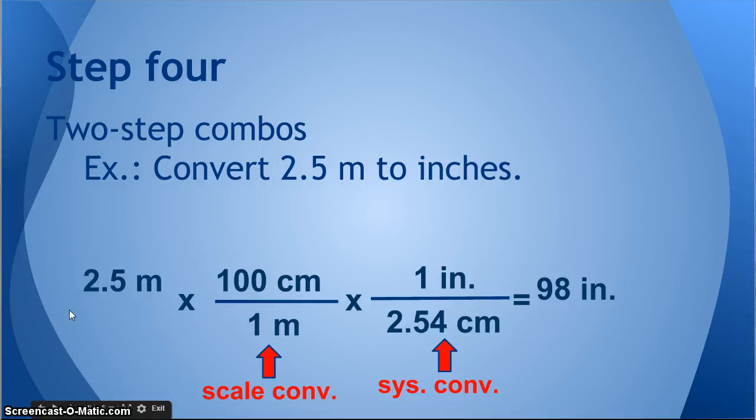The fourth type is if we combine two of those. So in this case, I've got a two-step combo. I'm converting from 2.5 meters to inches. It might seem like a simple inter-system conversion, but here's the problem. I know the equivalence between inches and centimeters, but not between inches and meters. So I've got to do one step first. Before I can convert from centimeters to inches, I have to convert from meters to centimeters. I'm doing a scale conversion first, then a system conversion.